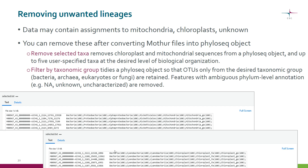If some of you have been using mothur before, usually at this step you would run the tool Remove Lineages. In Chipster we don't do that, even if the data may contain assignments to things like mitochondria or chloroplasts. You can remove these after converting the mothur files into phyloseq objects, and I will talk more about this later.